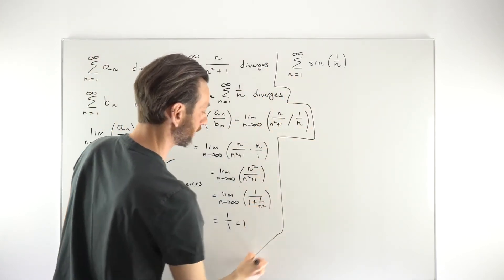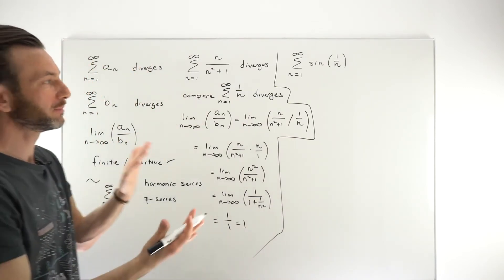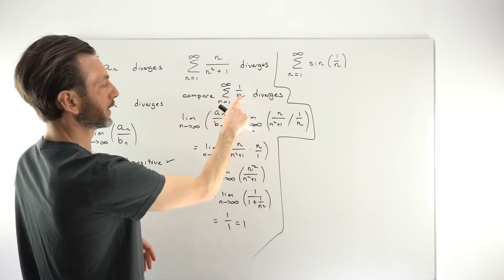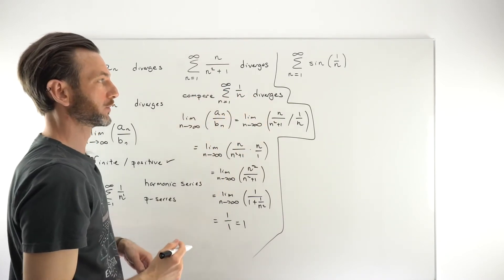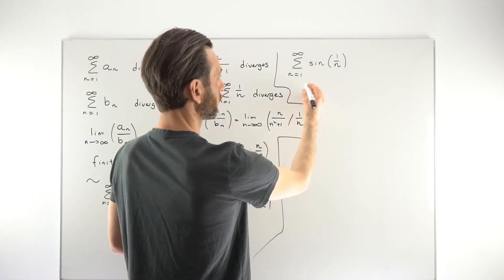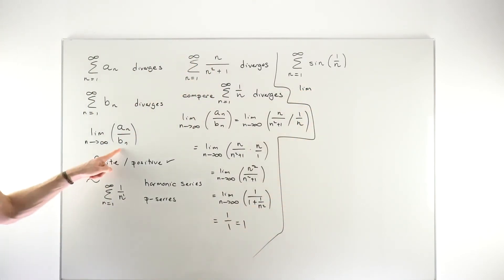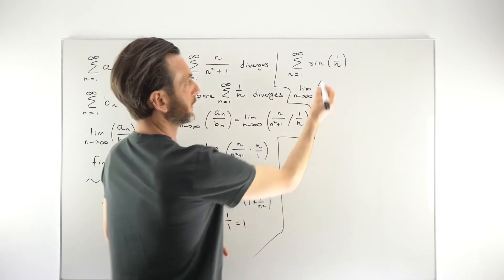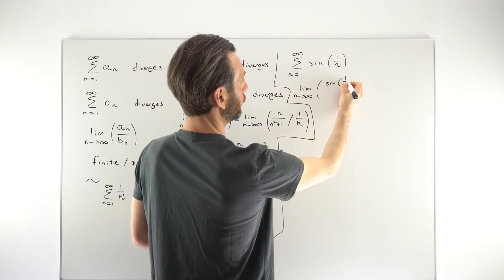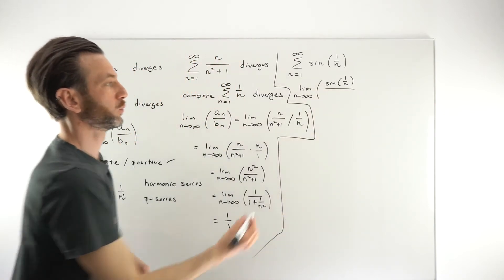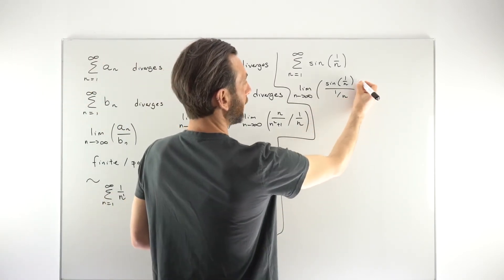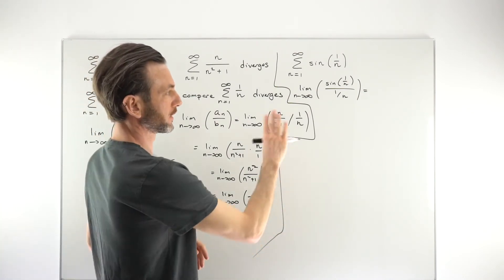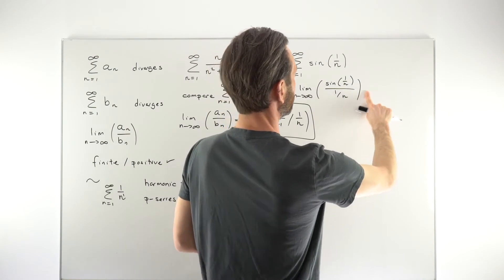The second example looks more difficult because it has a trig function with another function inside. We're going to take a similar approach and compare it with the harmonic series 1/n, which we know already diverges. So going straight into setting up our criteria, we take the limit as n tends to infinity of a_n over b_n: sine(1/n) divided by 1/n.